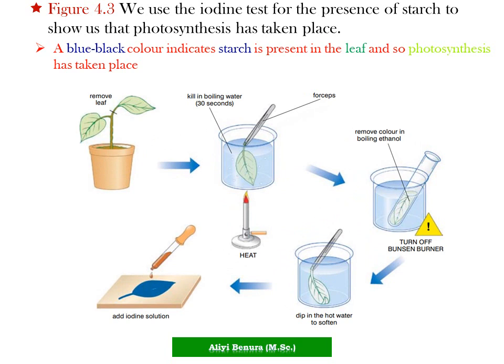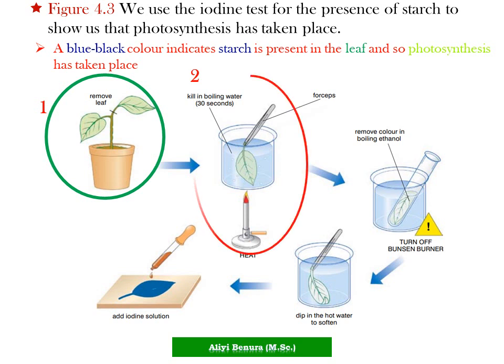Let us see the steps. Step 1: we remove the leaves from the plant. Step 2: we place the leaves into boiling water for 30 seconds. This water is boiled using heat from a Bunsen burner. Step 3: we remove the leaf from the hot water and place it into boiling ethanol.